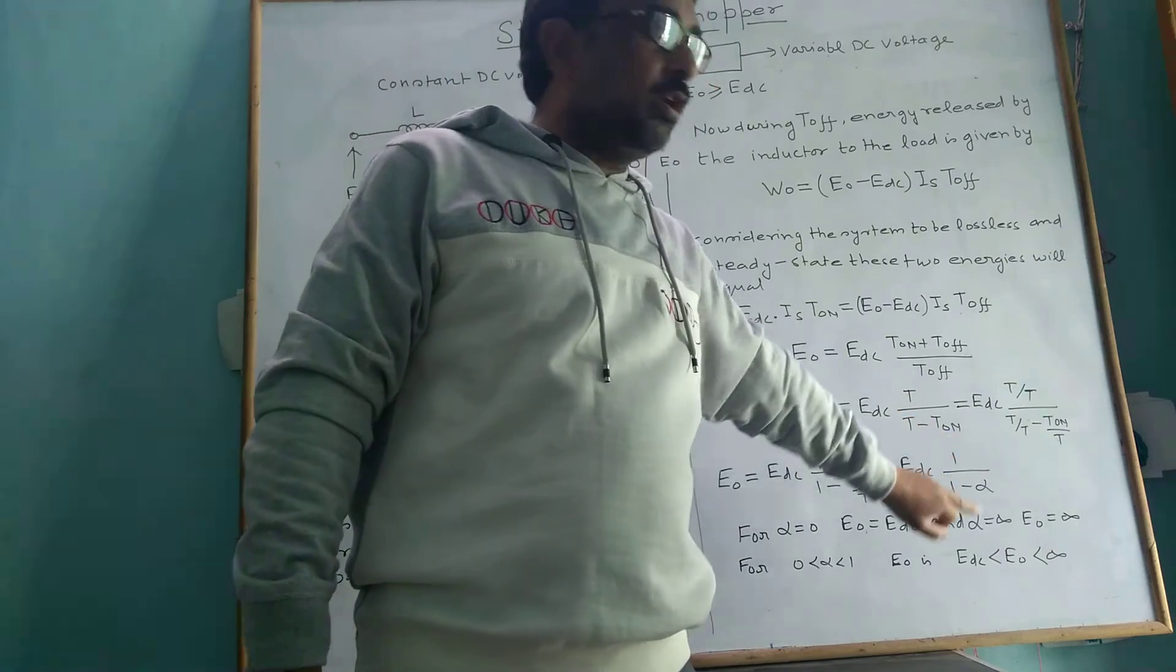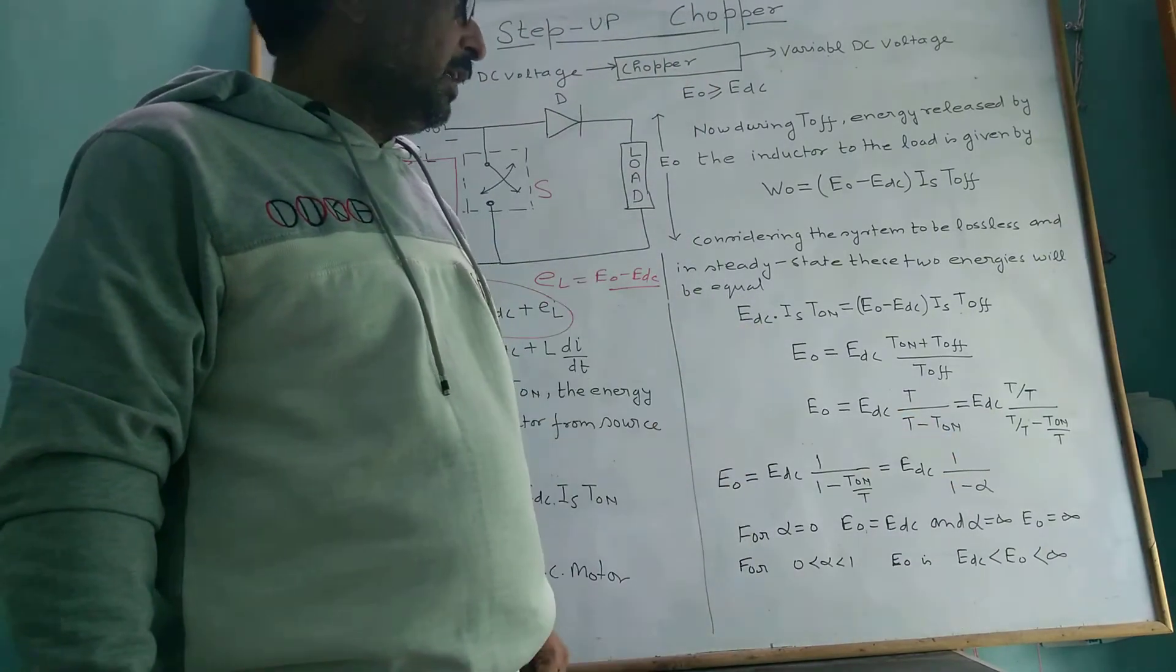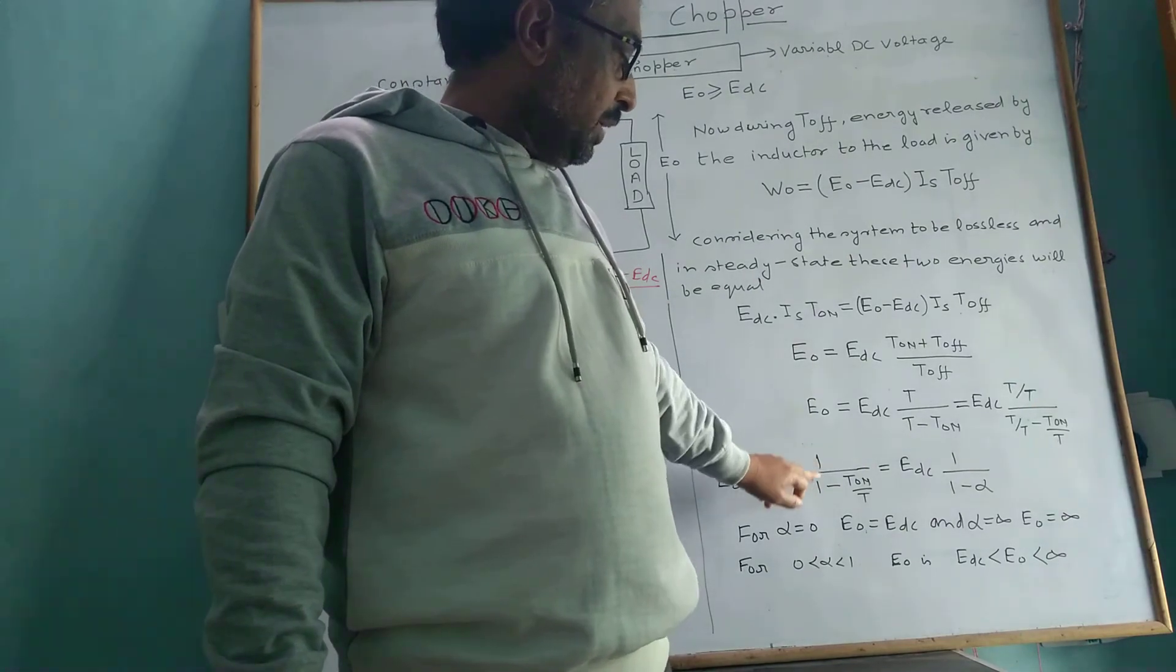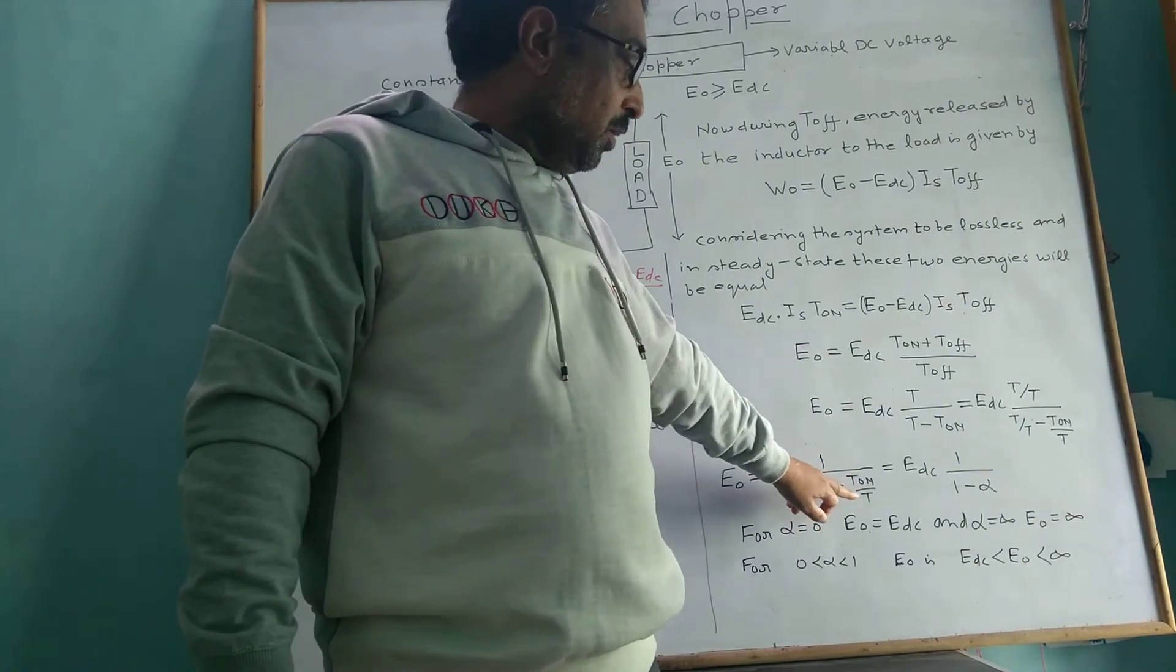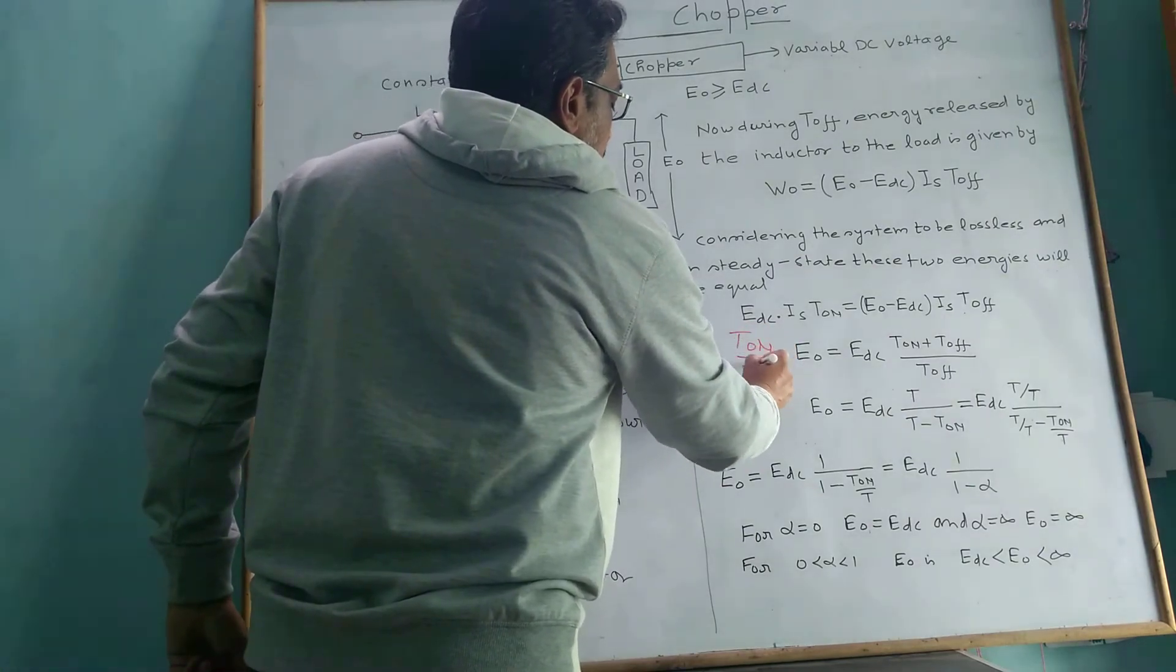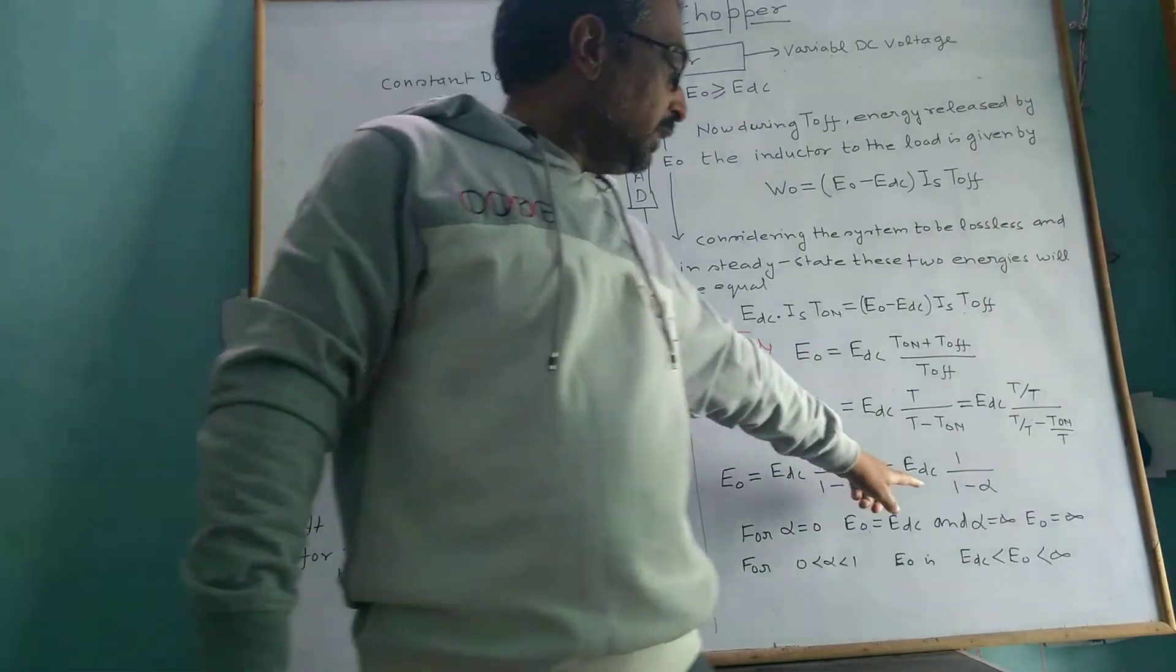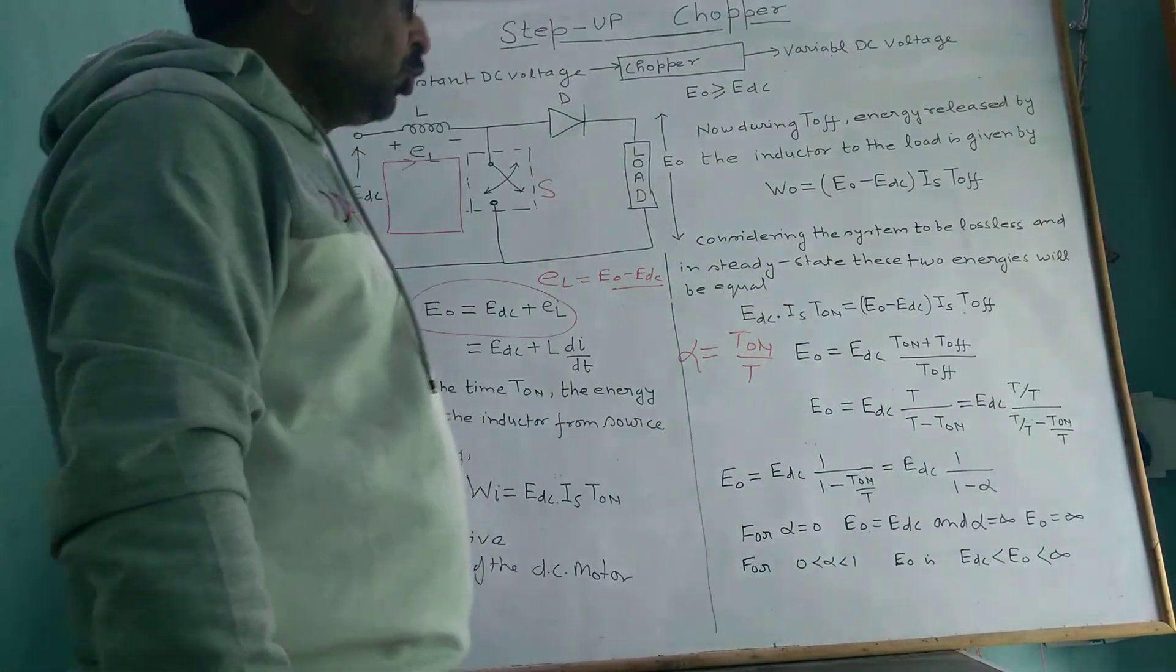If we divide by T on top and bottom, E₀ equals E_DC times 1 divided by 1 minus T_on divided by T. T_on divided by T equals alpha, the duty cycle. E₀ equals E_DC times 1 divided by 1 minus alpha, where alpha is the duty cycle.